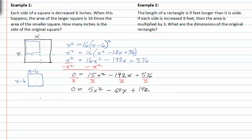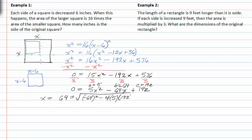From here we can use the quadratic formula to solve for x. a is equal to five, b is equal to negative sixty-four, and c is equal to one hundred ninety-two. x is equal to negative b plus or minus the square root of b squared — that is negative sixty-four squared — minus four times a, which is five, times c, which is one hundred ninety-two, all over two a, or two times five.